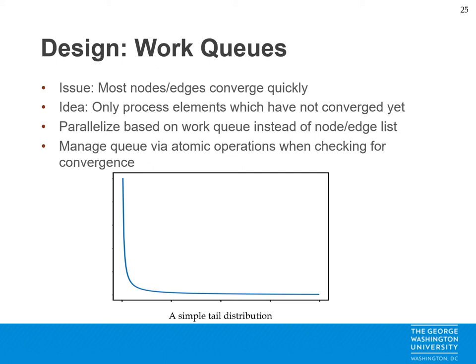Additionally, we optimize how we process the graphs themselves using work queues. This is to address the issue that most nodes and edges converge rather quickly and that much of the processing time is occupied by a few nodes or edges — in other words, it demonstrates a tail distribution of work. To address this, we use only a work queue of nodes or edges that have not converged yet for processing belief propagation, instead of performing needless work on nodes and edges which will not change much for a given step. We manage this queue by atomic operations while checking convergence, so that we can maximize the parallelism of our solutions while ensuring consistency.